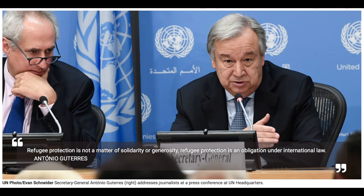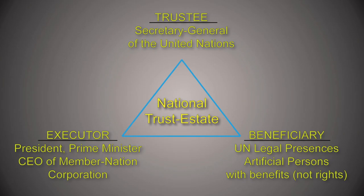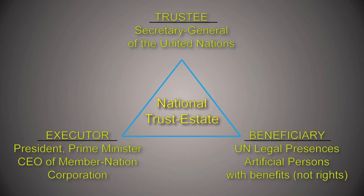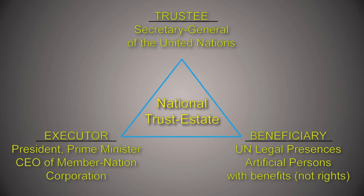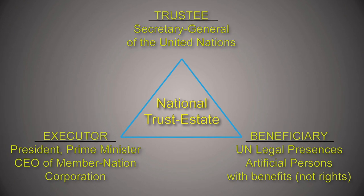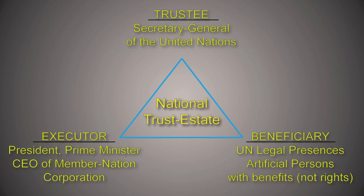Furthermore, when a government joins the U.N., the trusteeship of the National Trust is surrendered to the United Nations. The Secretary General acts as the trustee of the National Trust Estates, the President or Prime Minister as the Chief Executor's Office, and the Legal Presence Artificial Person Corporations are the beneficiaries of the National Trust Estates. The Presidents take orders for the National Trust Estates from the United Nations Secretary General.